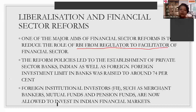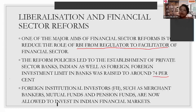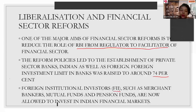Then came reforms that led to the establishment of private banks in India. Prior to 1991, private sector investment and foreign sector investment in Indian banking was very limited — highly confined. But then it was liberalized and allowed up to 74 percent, which is a huge percentage. Also for the first time, we allowed FII — Foreign Institutional Investments — into the banking sector.